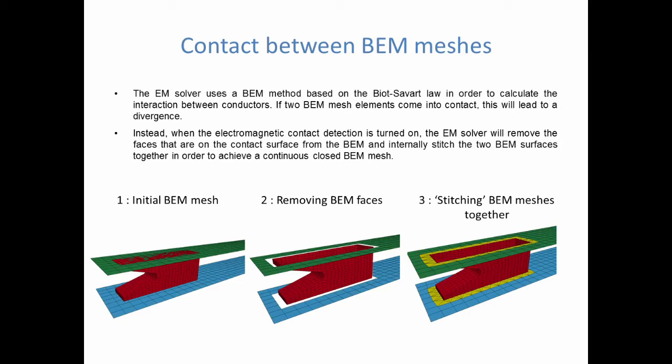The Biot-Savart law is a double integral that's divided by the distance. So when two faces from the BEM mesh come into contact, you get a number divided by the distance which in this case is zero, and this will lead to infinity. The problem will diverge unless you turn on the electromagnetic contact detection feature.